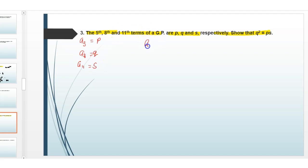For GP general term, An equals Ar raised to power n minus 1. So A5 equals Ar, 5 minus 1 is 4. A8 equals Ar, 8 minus 1 is 7, and A11 equals Ar, 11 minus 1 is 10.